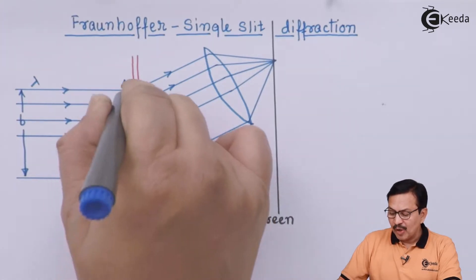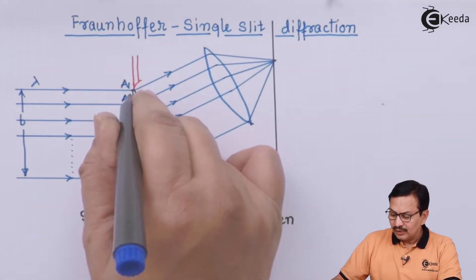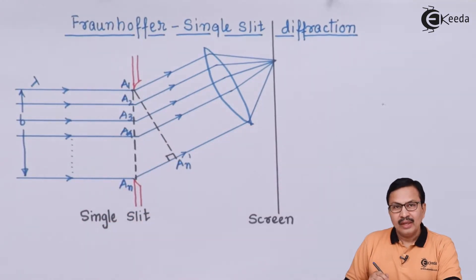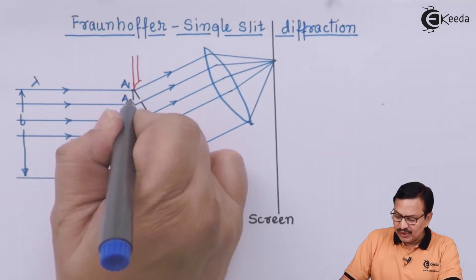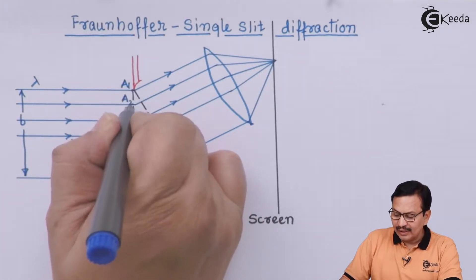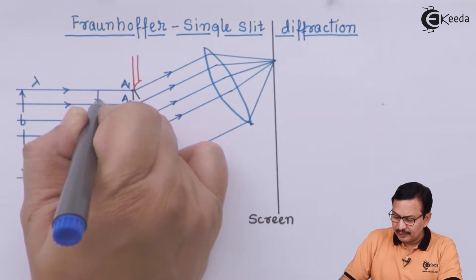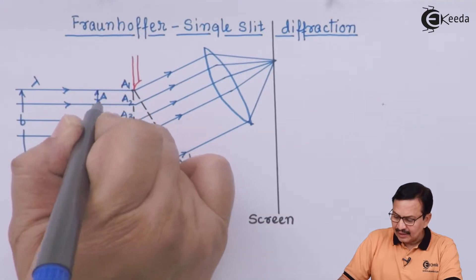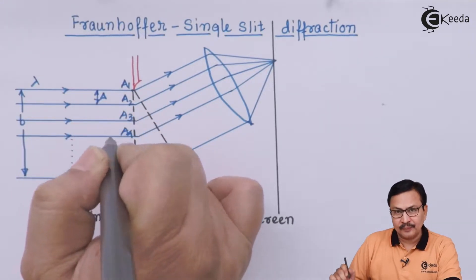I drop a perpendicular from a1 to an dash. I assume that the distance between two Huygens secondary sources is delta. So this is delta, this is delta, this is delta, and so on and so forth up till the end.